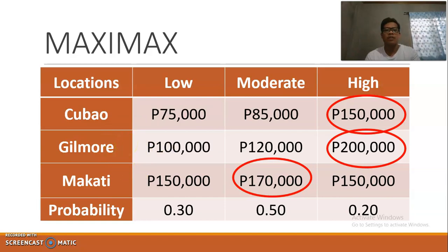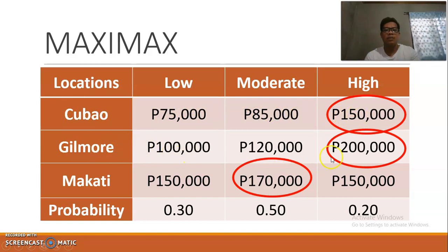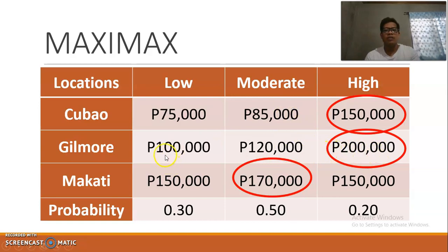The second decision environment is decision making under uncertainty, where the decision maker is not certain about possible scenarios. The first criterion is Maximax — the maximum among the maximums. For Cubao the maximum is 150,000; for Gilmore the maximum payoff is 200,000; for Makati the maximum is 170,000. Among these, 200,000 is the highest, so the management should open a new branch at Gilmore.